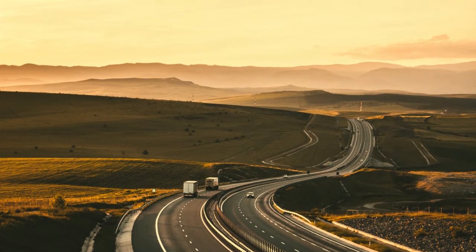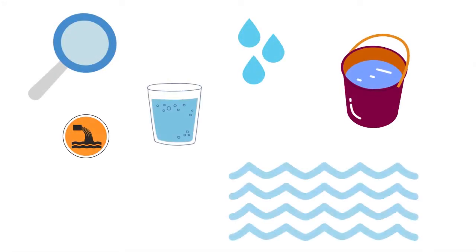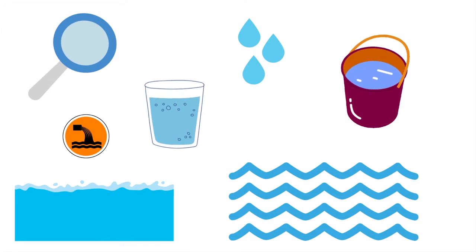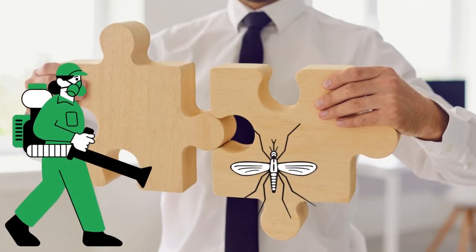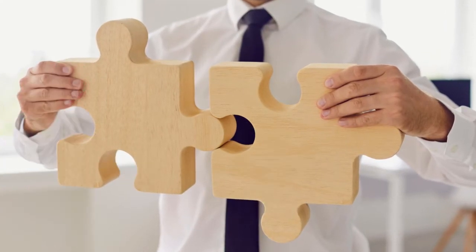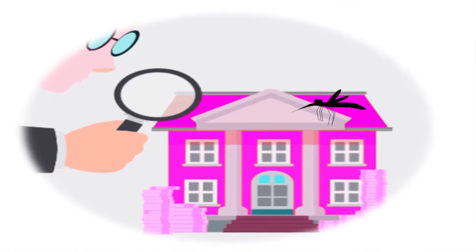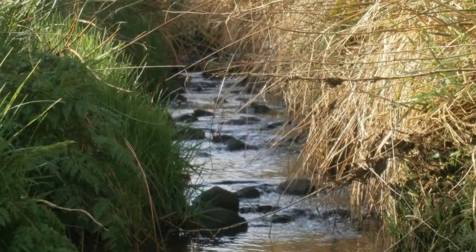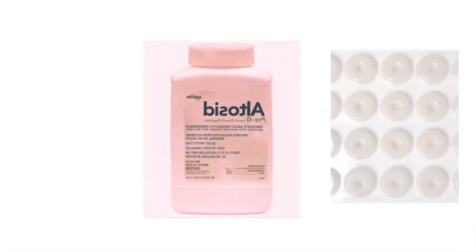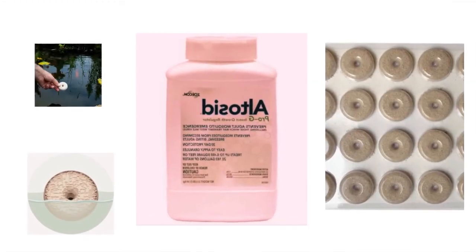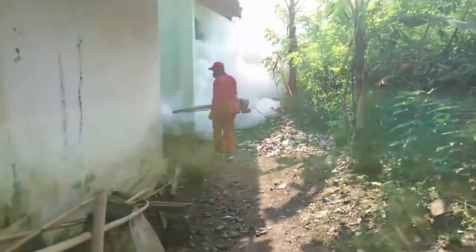In mosquito control operations, inspection is the important part. Inspect the breeding site and any type of standing water on your premises. After inspection, apply integrated pest management measures. Larvae surveillance is important to control mosquitoes. Remove all standing and stagnant water, and apply larvicide to breeding sites to kill larvae.